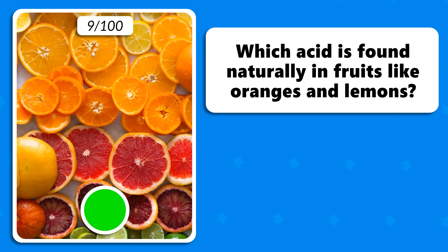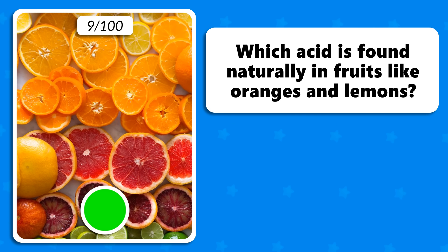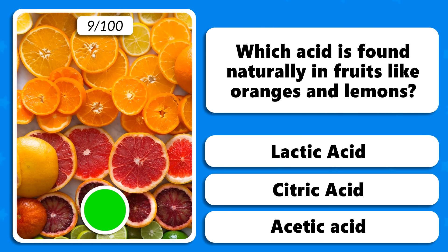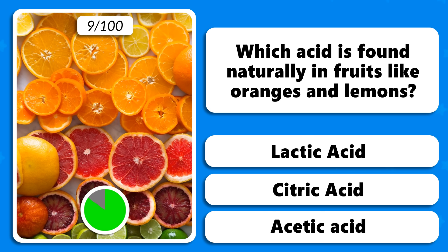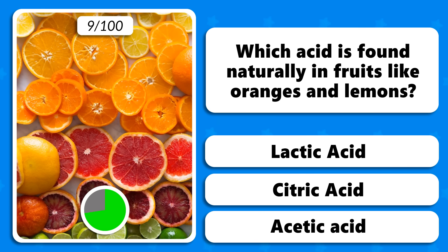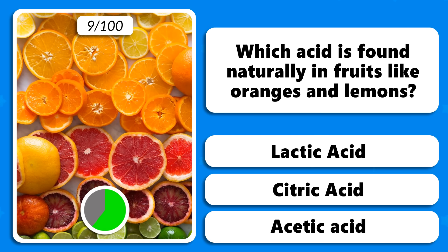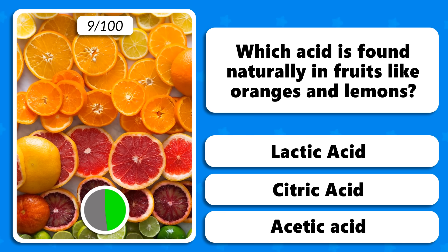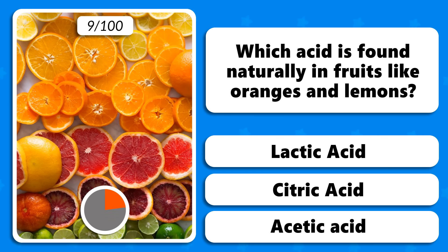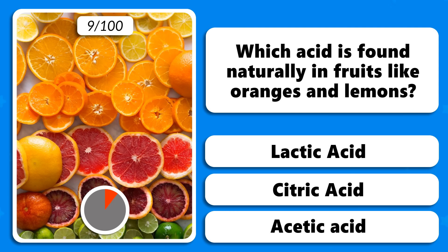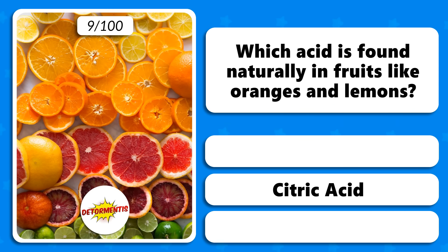Which acid is found naturally in fruits like oranges and lemons — lactic acid, citric acid or acetic acid? Citric acid.